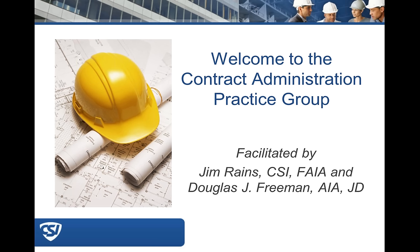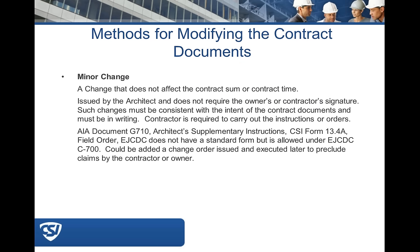When an owner or architect initiates a change, it's typically done with a change proposal request. The contractor responds or initiates a change with a change order request. We're going to move into talking about the minor change that the architect can make — one that does not require a written change order. A change that doesn't affect the contract sum or time, the architect can issue via AIA document G710, Architect Supplemental Instructions.